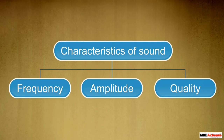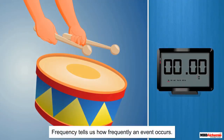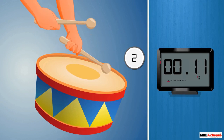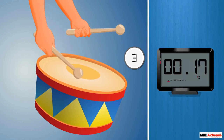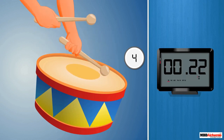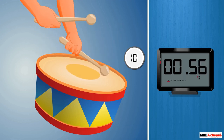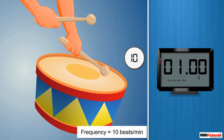Let us start with frequency. Frequency tells us how frequently an event occurs. Suppose you are beating a drum — the number of times you beat the drum per unit time is called the frequency of the drum. If we beat the drum 10 times in one minute, we can say that its frequency is 10 beats per minute.